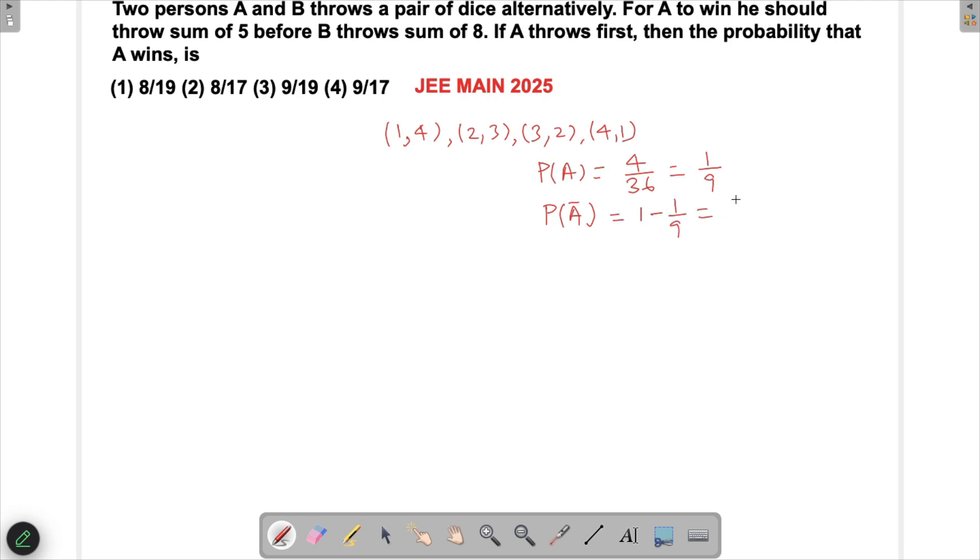Now let's focus on B - that's where this problem is changing. For B to win, he has to throw a sum of 8. So you can see 2,6 is possible, 3,5 is possible, then 4,4 is possible, then 5,3 is possible, and then 6,2.